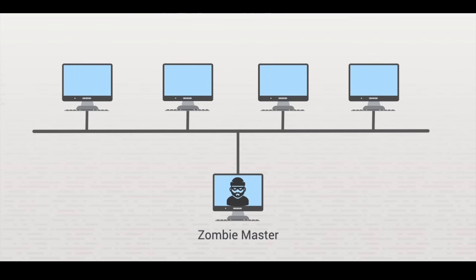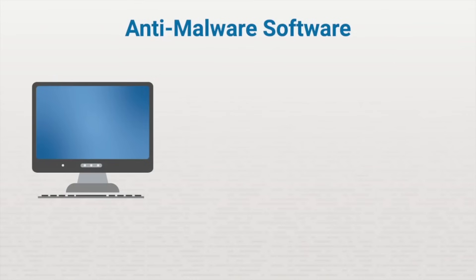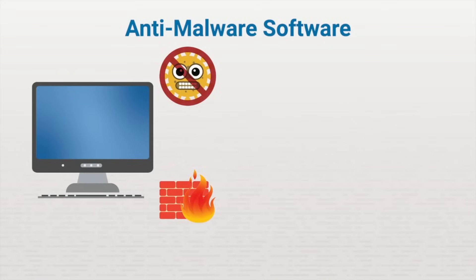A zombie master could use the botnet for spamming, committing click fraud, performing a distributed denial of service attack, and many other types of exploits. To discover this type of malware, you can examine your computer's firewall log to see if it's been acting as a zombie. In the log, you should see the outbound traffic from the zombie going through the firewall to the zombie master. In addition, you need to install an anti-malware system, which should be able to detect a Trojan.